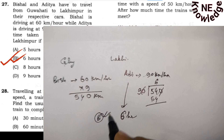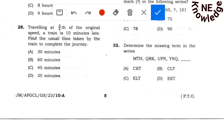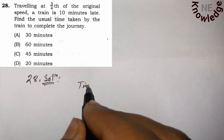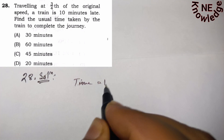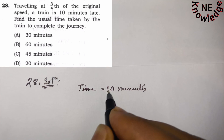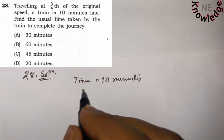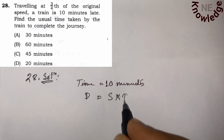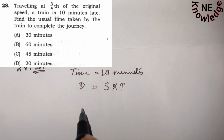Question number 28: A train is traveling at 4/3 of the original speed and is 10 minutes late. Find the usual time taken by the train to complete the journey. The time difference is 10 minutes.